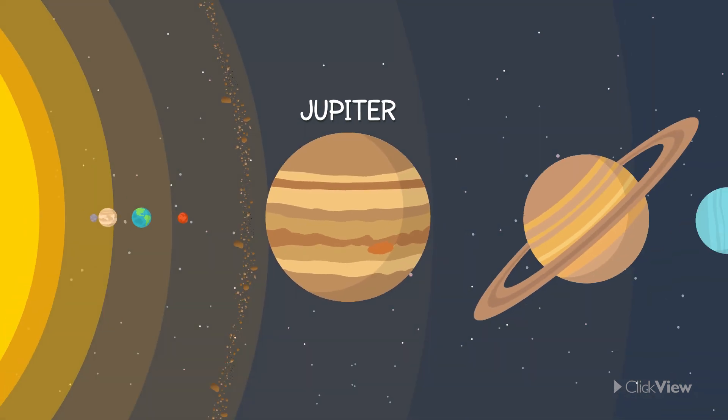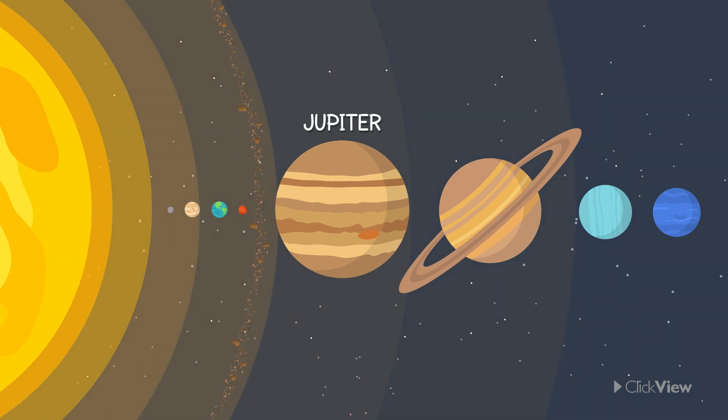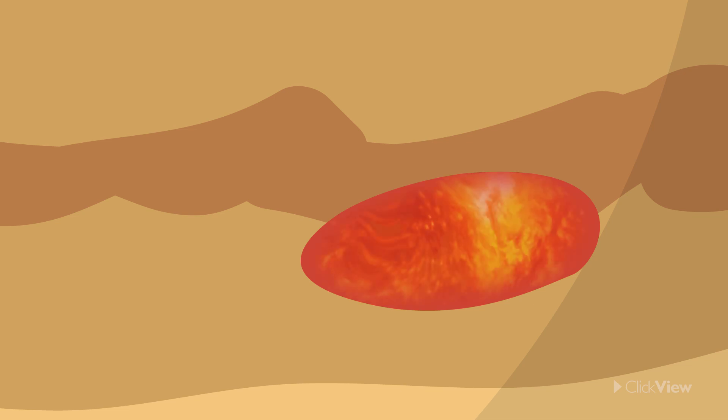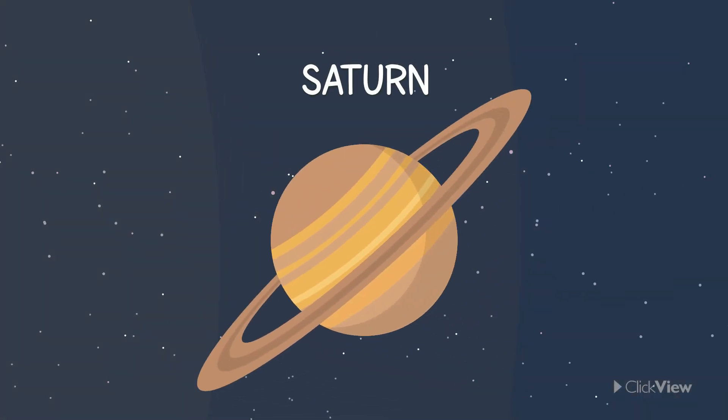It is the largest planet in the solar system. Jupiter has an easily recognizable great red spot which is actually a giant storm that is always occurring on the planet's surface.